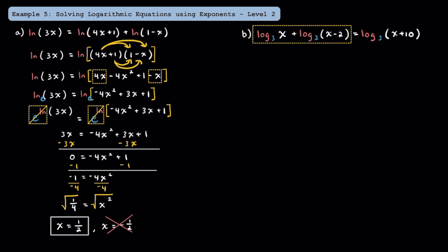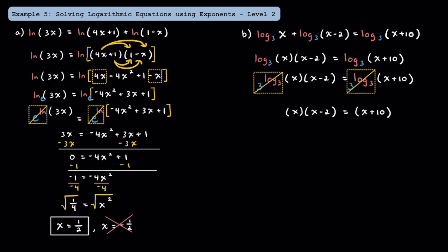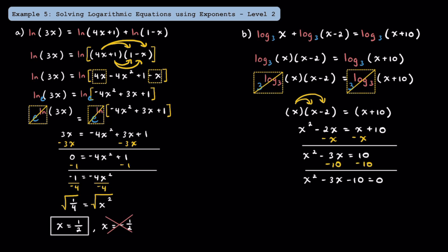Now let's check out this equation on the right. We have a sum of logs on the left side, and we can condense this because they have the same base of 3. Condensing the left side, we now have log base 3 of x times the quantity of x minus 2 is equal to log base 3 of the quantity of x plus 10. Since we have one logarithm on each side and they're both base 3, we exponentiate both sides with a base of 3, which cancels out the logs, and we're left with x times the quantity of x minus 2 is equal to x plus 10. Distributing, we get x squared minus 2x is equal to x plus 10.